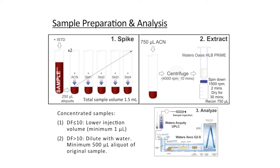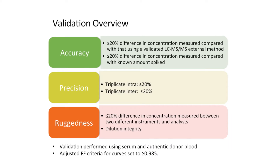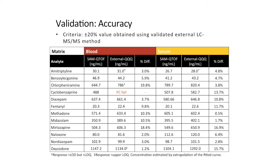After method development, it was moved into validation. The main parts of the validation included looking at the accuracy, precision, and ruggedness of the method. The validation was performed using both serum and authentic aged whole blood purchased from a donor blood bank, spanning a number of different blank blood lots.